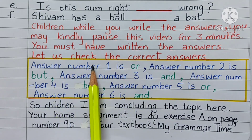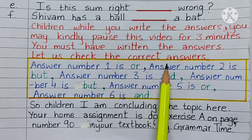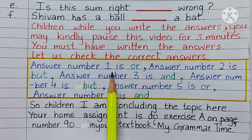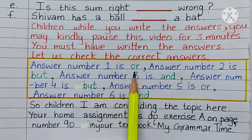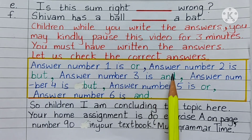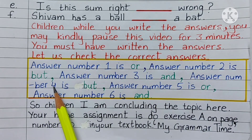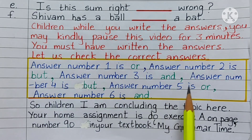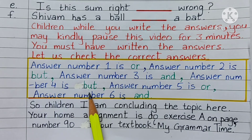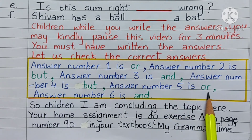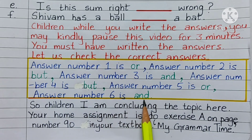You must have written the answers. Let us check the correct answers. Answer number 1 is OR. Answer number 2 is BUT. Answer number 3 is AND. Answer number 4 is BUT. Answer number 5 is OR. Answer number 6 is AND.